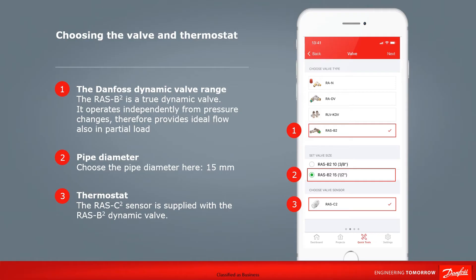Now we need to select the type of valve we're installing, the connection size, and the sensor. Here we select the RAS B2, 15 millimetre valve size, and the RAS C2 sensor. Once that's done, click next to continue.